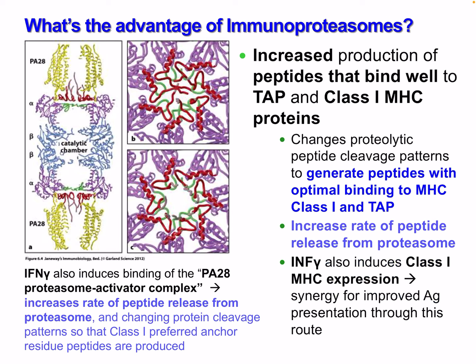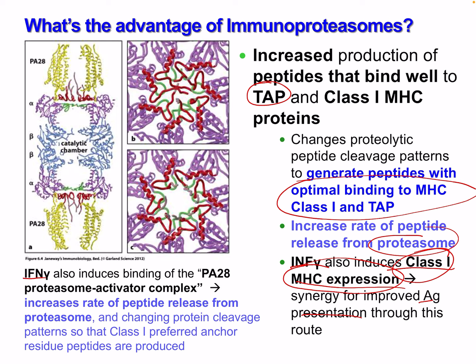The advantage of the immunoproteasome is increased production of peptides that bind well to TAP and class 1 MHC proteins. It changes proteolytic peptide cleavage patterns to generate peptides with optimal binding to both MHC and TAP1, and increases the rate of peptide release from the proteasome. Interferon gamma can also induce class 1 MHC expression — there is synergy for improved antigen presentation. Additionally, interferon gamma induces binding of the PA28 proteasome activator complex, which increases peptide release and changes cleavage patterns to produce class 1-preferred anchor residue peptides. This is one of those examples of innate immunity affecting adaptive immunity.